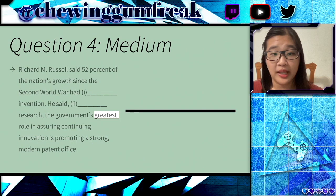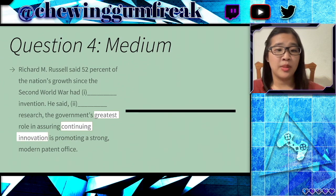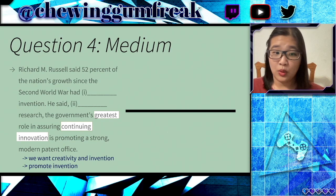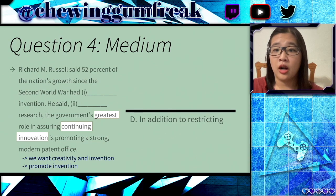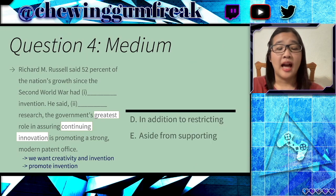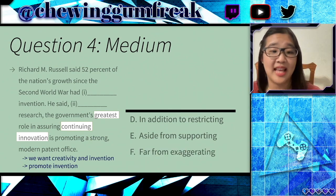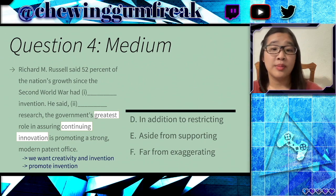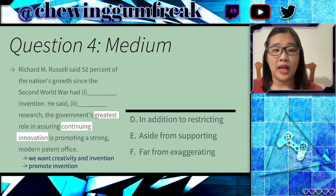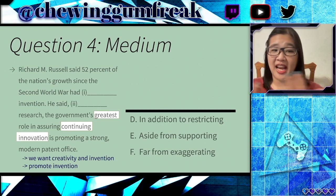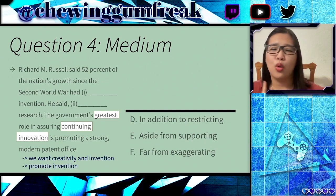Looking at the first two blanks, we have the nation's growth and then the government's role. Let's take a look at the government's role in continuing innovation — we want creativity, we want invention, and we want to promote that. The three options for blank number two are: 'in addition to restricting,' 'aside from supporting,' and 'far from exaggerating.' This blank is talking about research, and the government's greatest role in assuring continuing innovation is promoting a strong modern patent office. So this is really about figuring out what the relationship is between research and invention — are we restricting, supporting, or exaggerating research?